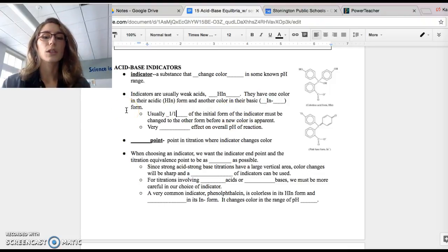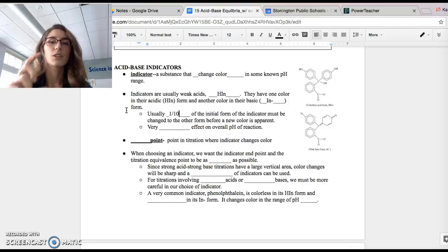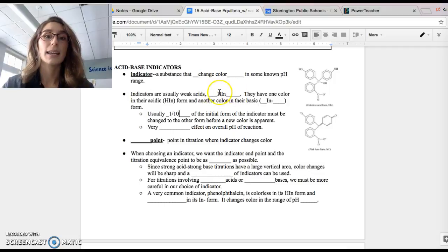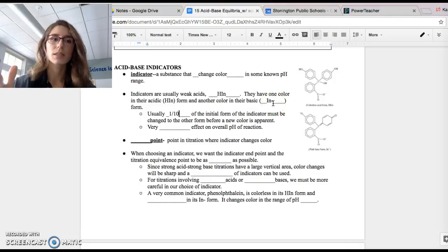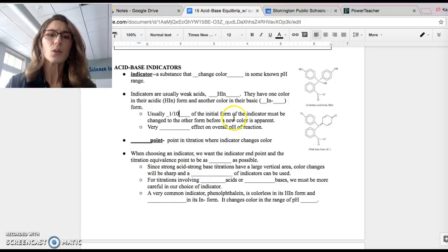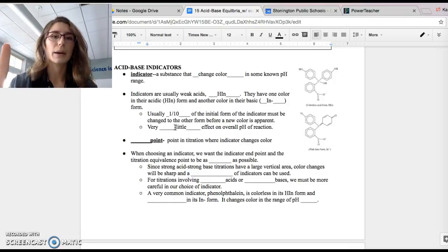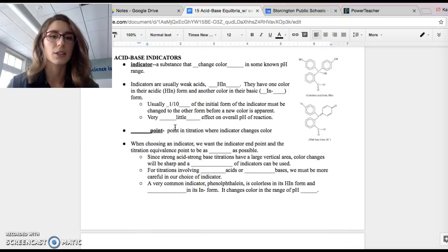This is really important. Usually one-tenth of the initial indicator has to be changed to the other form before we see a color change. So when one-tenth of the HIN, that's what we're starting with, when one-tenth of the HIN dissociates into IN- and H+, that's when we notice a color change in the solution, or in our titration. And again, there's very little effect on the overall pH of the reaction. So we don't worry about calculating this when we're calculating pH. It does not affect the pH.